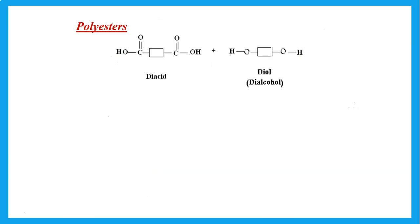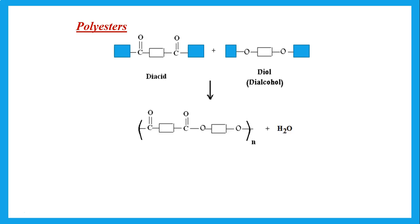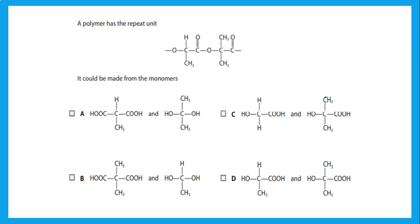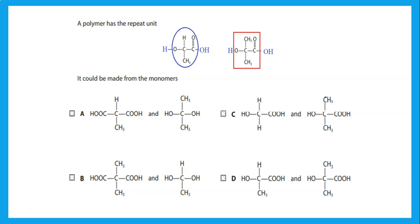Polyesters are polymers formed by reacting a diacid (with two acid groups) with a diol (with two OH groups). We remove OH from one acid and H from one alcohol, then repeat. In identifying monomers of a polyester from its repeat unit: anything with C=O was originally an acid, and anything with just an O linkage was originally an alcohol.